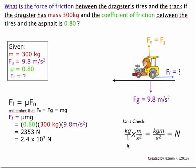Finally we have our unit check. Kilograms over 1 times mass over seconds squared equals kilograms times mass over seconds squared, which simply equals newtons.